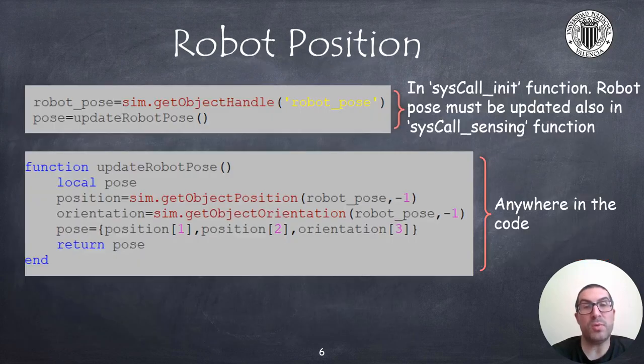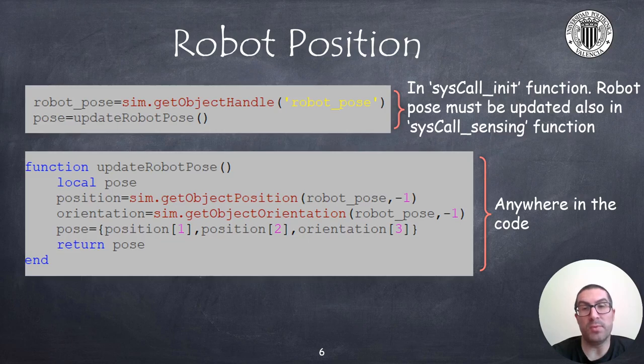To access the robot position we will implement this simple code. On the right hand we will access to the handle of the object that we have previously created and we will create a POSE variable with the current robot configuration at the initialization section of the program. This variable will also be updated in the sysCall_sensing function by calling the updateRobotPose function. As you can see this function returns a vector with the position X, Y and the robot orientation, later needed in some of the functions to be implemented.